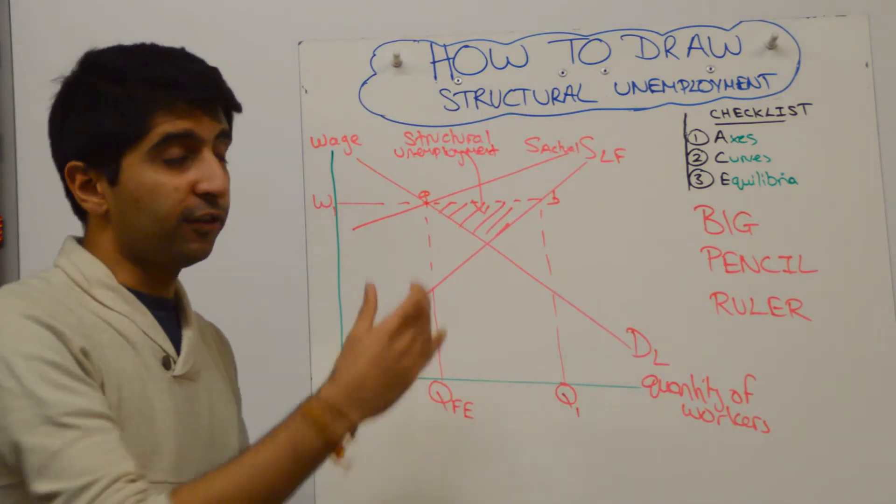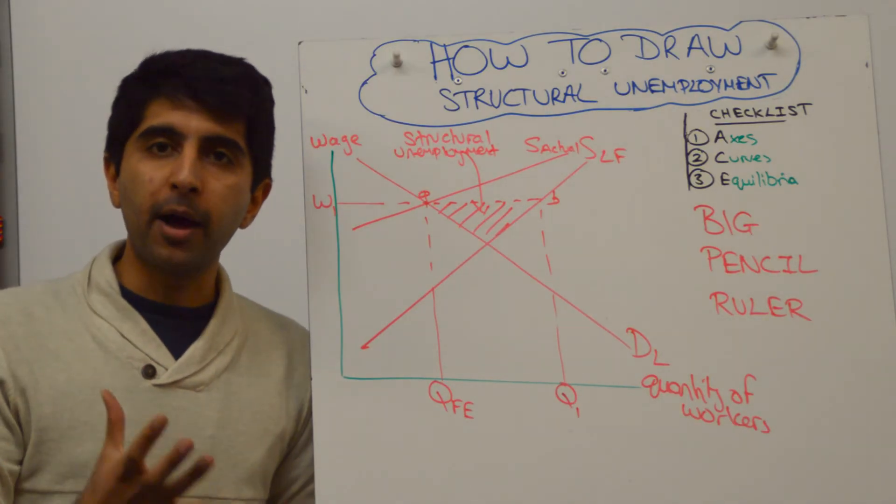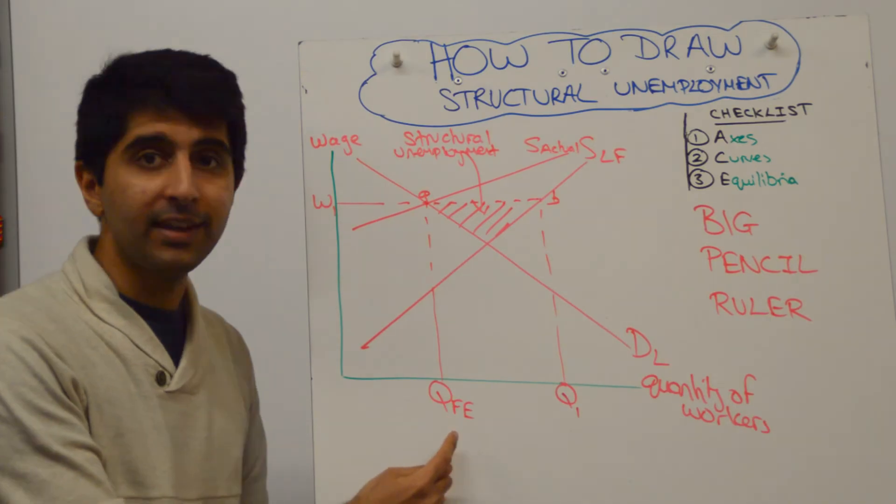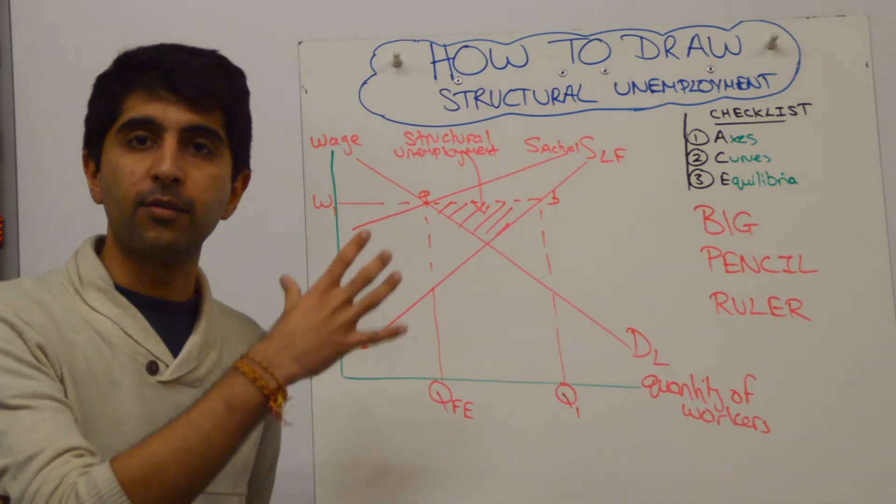You can also say that this is frictional unemployment and seasonal unemployment. It's the unemployment that exists when the labour market is in full equilibrium. So you can see here, we're in full equilibrium, but there are still workers that aren't working because they reject the job.